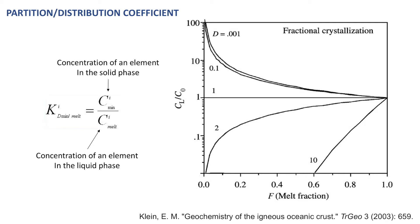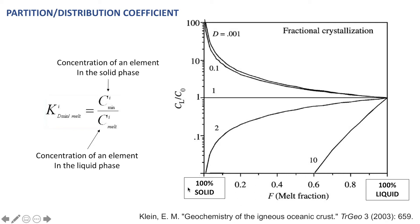In this diagram along the x-axis we have F, or melt fraction, which essentially means 100% solid at this end and 100% liquid at this end, and anything in between represents a mixture of solids and liquids. Partition coefficients essentially tell us the amount of any element hosted in that solid component and the amount of it hosted in that liquid component.